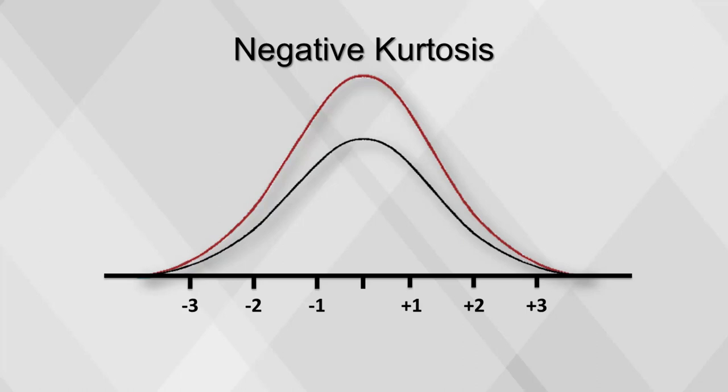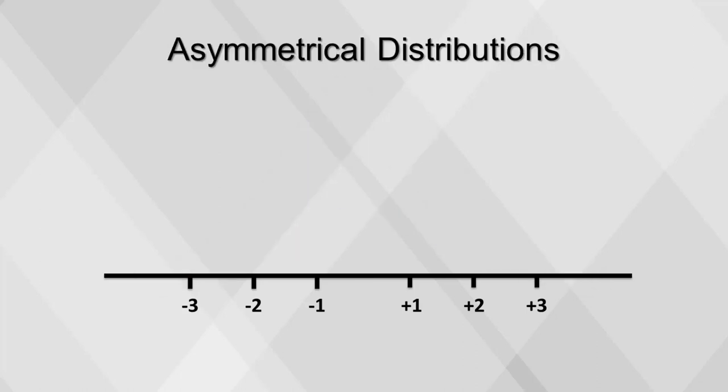A distribution with more values in the tails has negative kurtosis. The normal distribution is a type of symmetrical distribution in which the mean is equal to the median, and there is an equal probability of a value falling on either side of the mean.